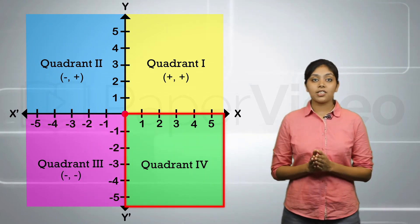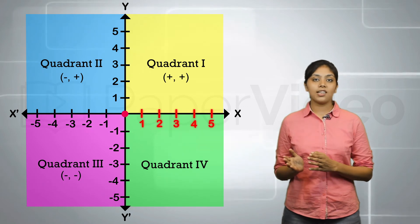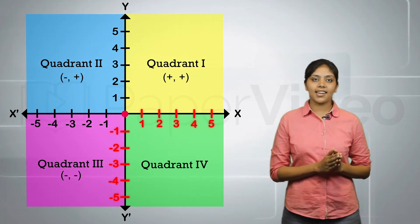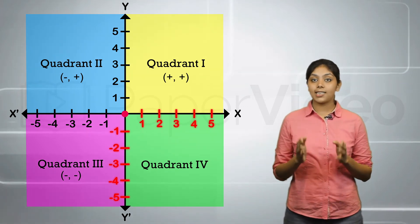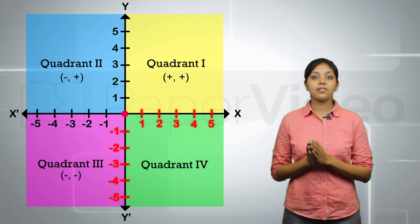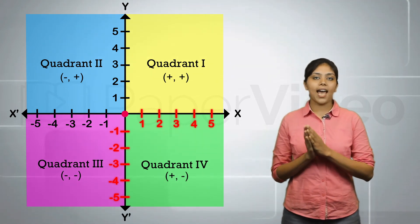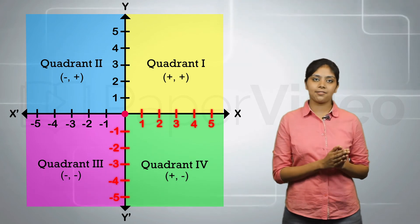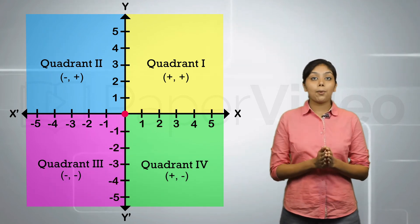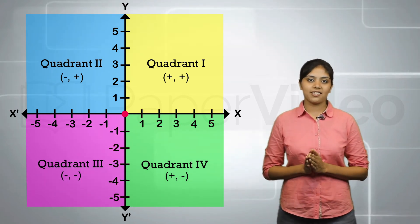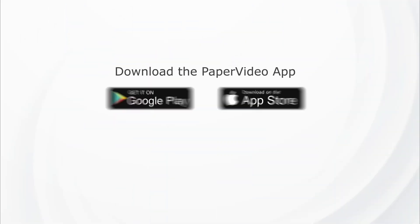In the fourth quadrant, the x-coordinate is positive but the y-coordinate is negative. This means that any point lying in the fourth quadrant will have its abscissa positive and ordinate negative. The points on the axis are not included in the quadrants.